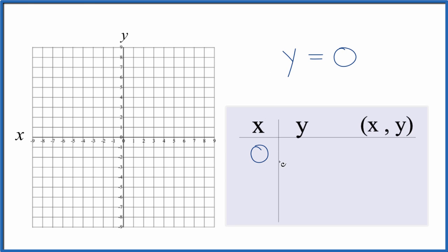So if we say x is 0, well y is equal to 0. There's no x here, so y is just equal to 0. If we said x was 1, y is still equal to 0.